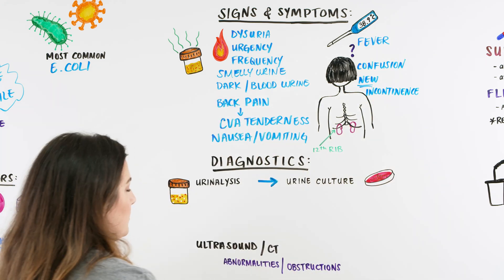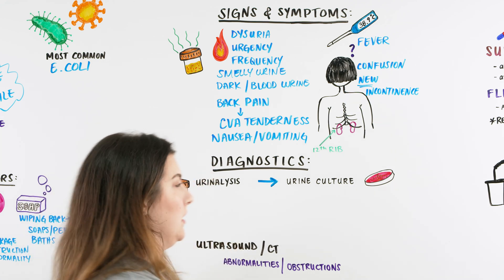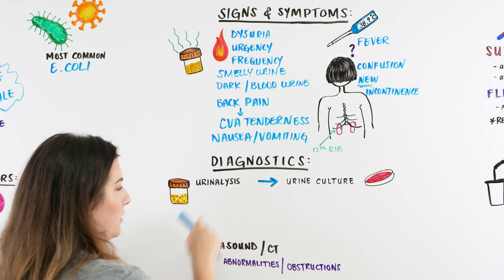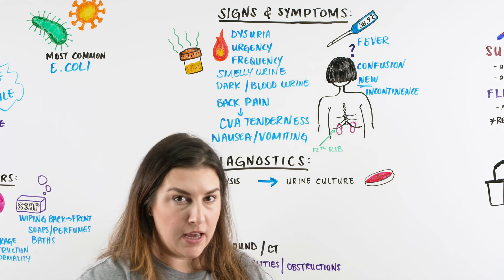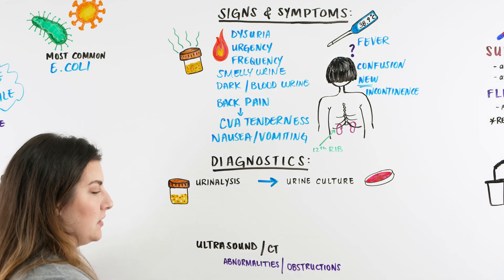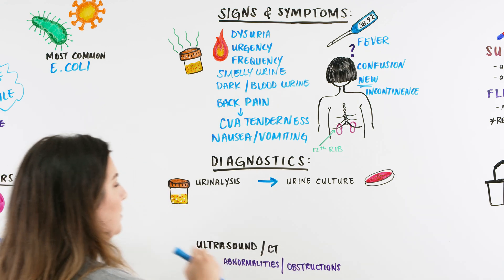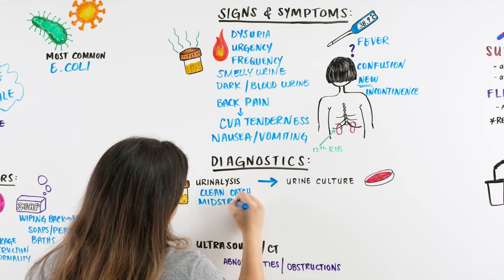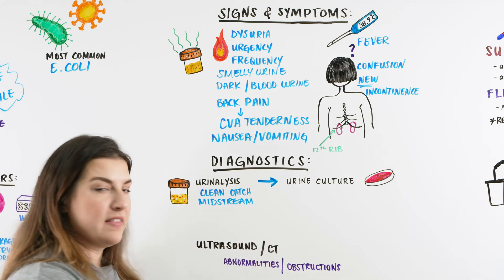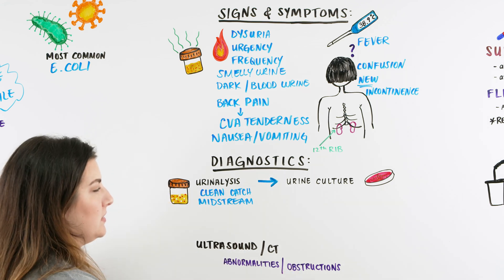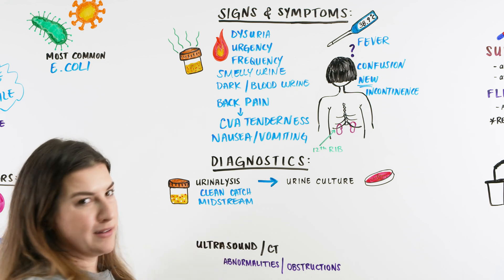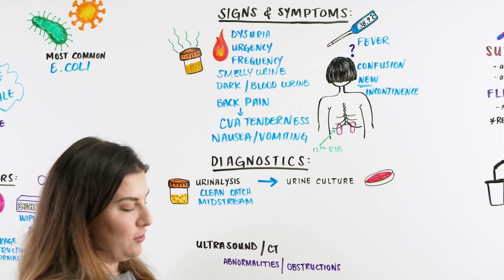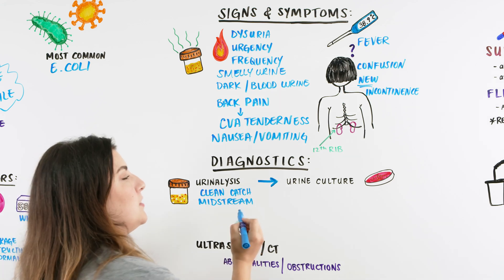Once we suspect a UTI, we can get diagnostics done. We can do blood work, but the key test is a urinalysis. We want a clean-catch midstream urinalysis — the patient must clean themselves with a wipe first. We instruct the patient: wipe, pee a little bit first, then collect the urine into the container without touching the inside of the lid or container, and bring it to us. We send it to the lab, where it may show blood, white blood cells, and bacteria in the urine.